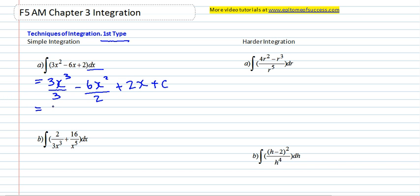So at this point, you just simplify what you can, and that leaves you with x cubed minus 3x squared plus 2x plus C. And this is your final answer.